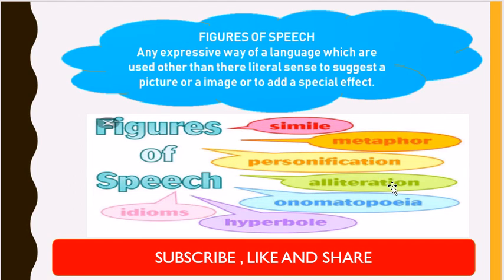There are seven types of figures of speech: simile, metaphor, personification, alliteration, onomatopoeia, hyperbole, and idiom. Today we will learn how to write a poem using personification.